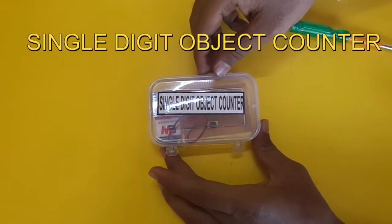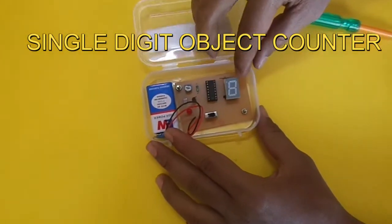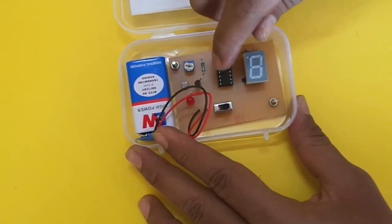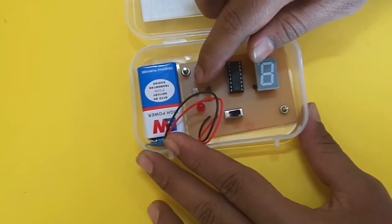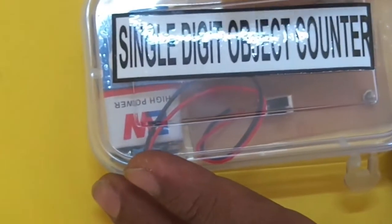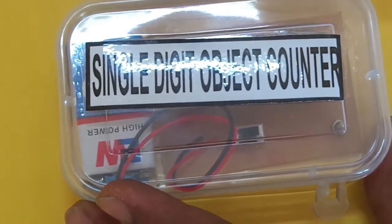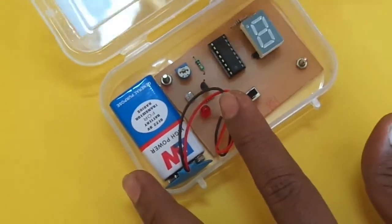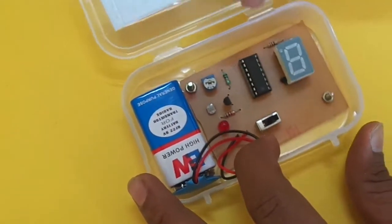Hello, this is a single digit object counter. Here we have used a seven segment display and a 4026 IC with the help of an LDR. This is a single digit object counter and it can be used as any of the security systems.